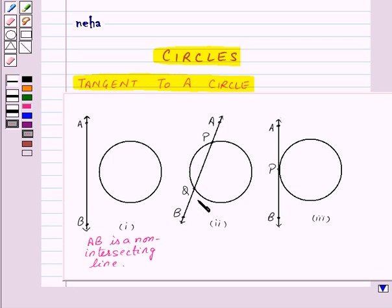In the second case, line AB intersects with the circle at two points P and Q. So here, line AB is a secant of the circle.